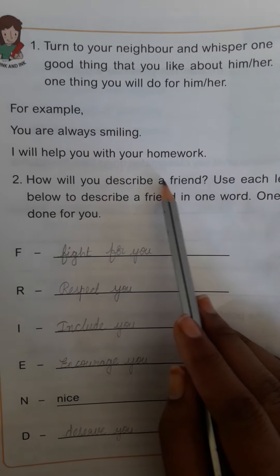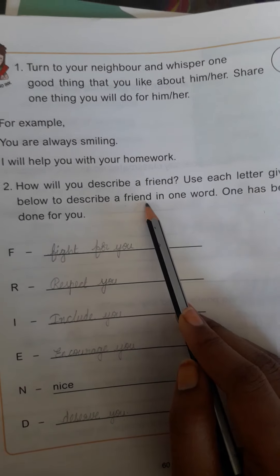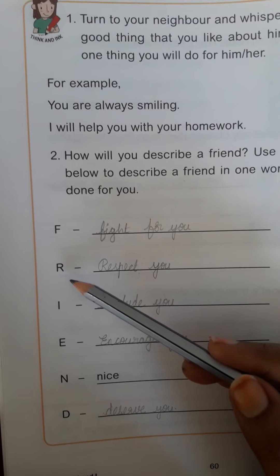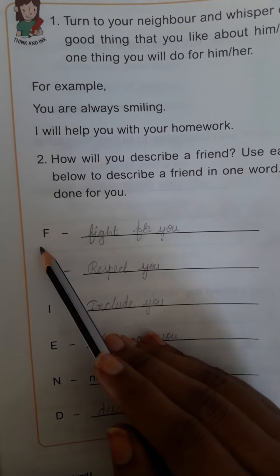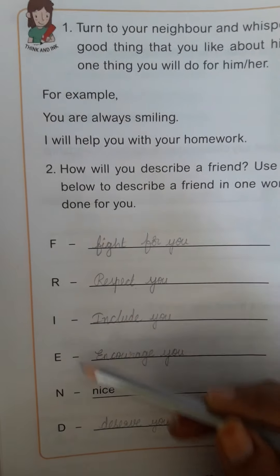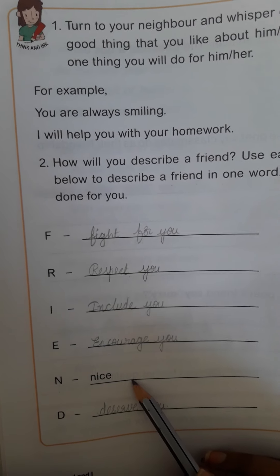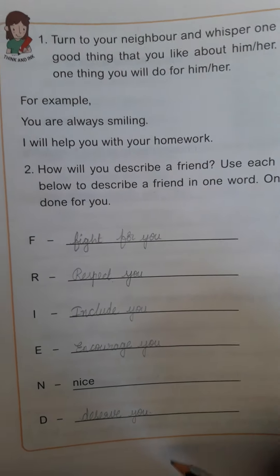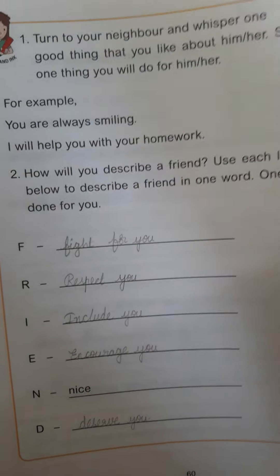Second activity on page 60: How will you describe a friend? Use each letter given below to describe a friend in one word. One has been done for you. The word is FRIEND — F-R-I-E-N-D. Each letter of the word 'friend' you have to describe. For example, N means nice — the friend will be nice to you. You can also write something different from the example.